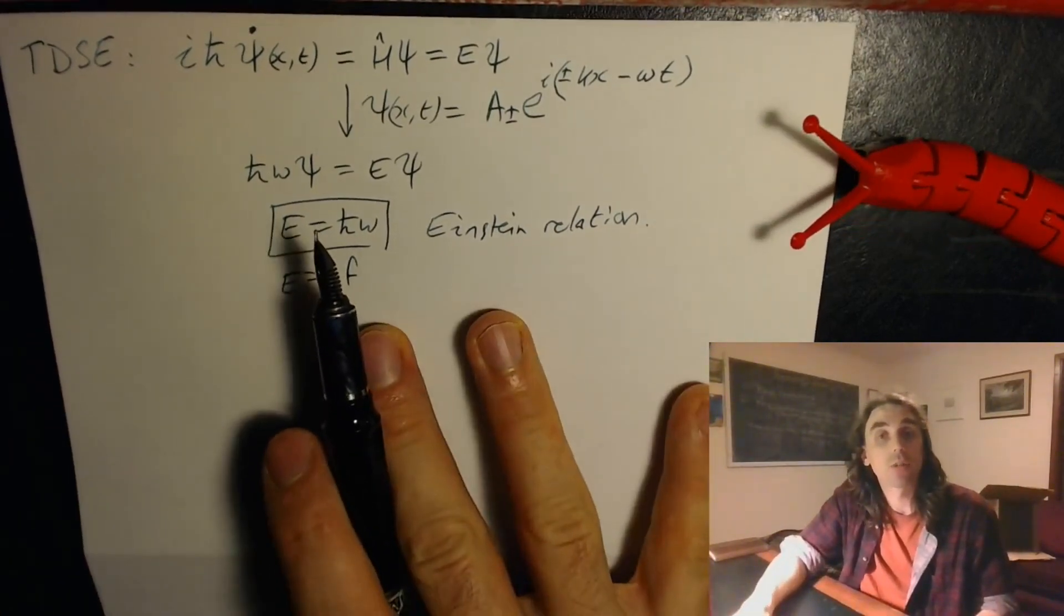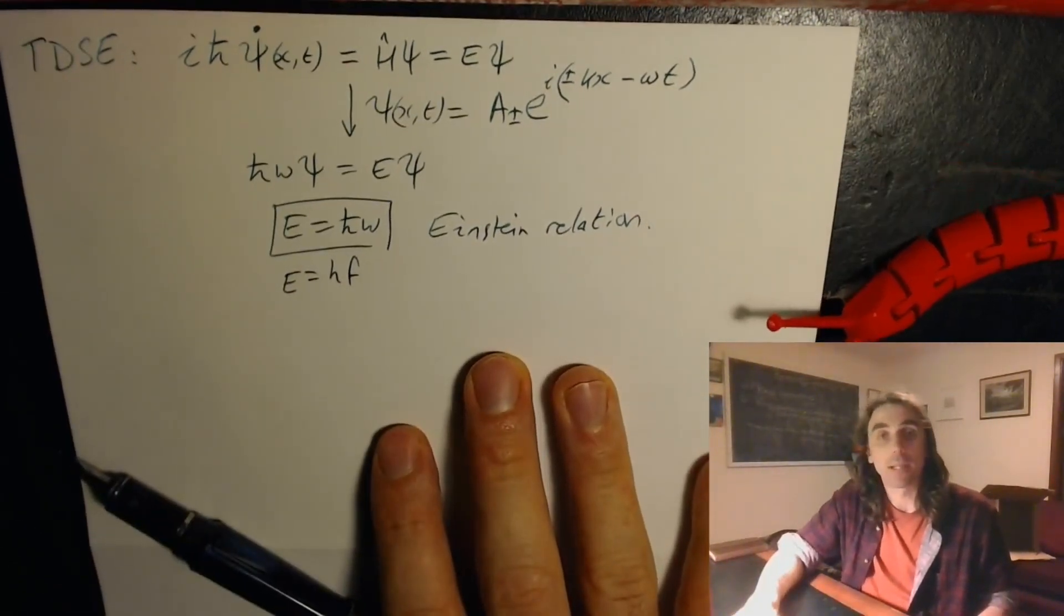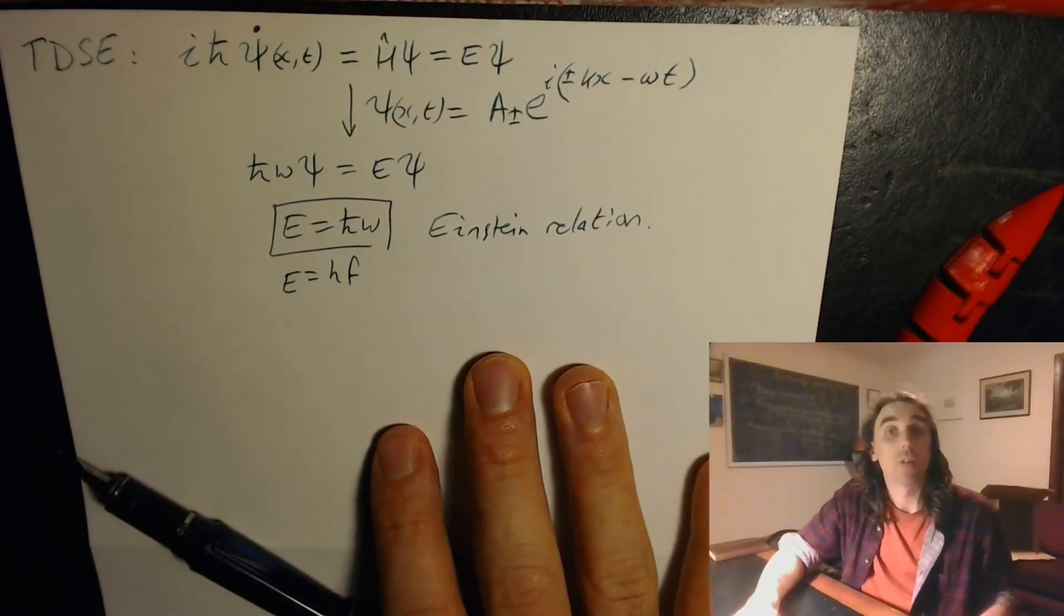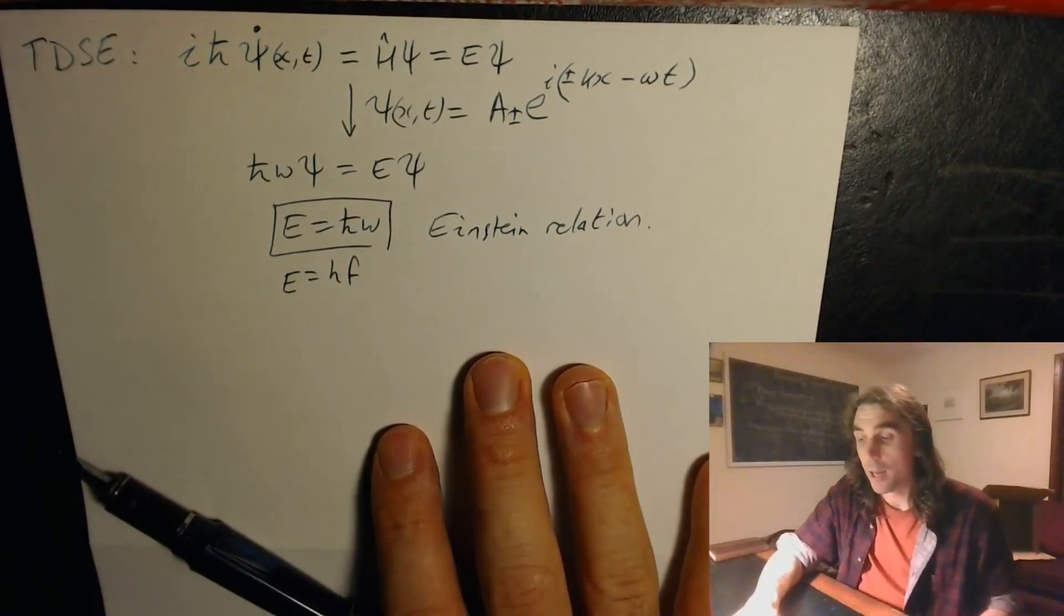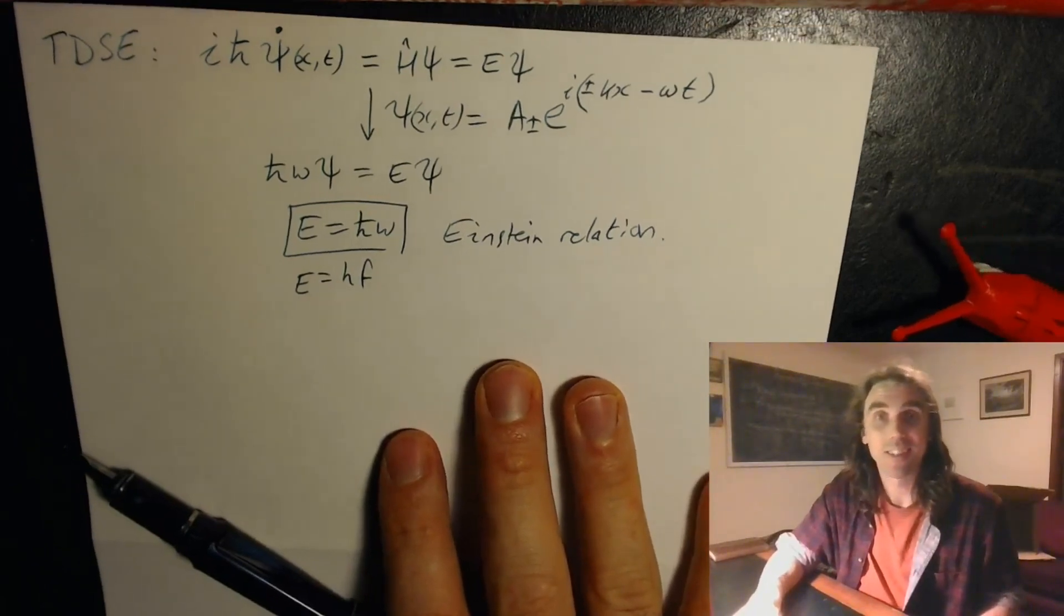That's by construction part of the Schrödinger equation. So that's the first example of a simple solution to the Schrödinger equation. Thank you for your time.